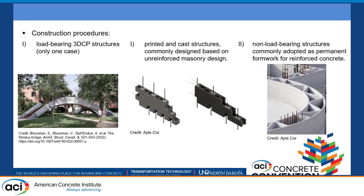One of the most important takeaways from our study was that we could categorize the built projects into three different categories: one, purely load-bearing 3D CP structures, which surprisingly was only one project; secondly, printed and cast structures commonly designed based on unreinforced masonry design; and lastly, non-load-bearing structures commonly adopted as permanent formwork for reinforced concrete. We found only one purely 3D CP project, showing a lack of information on how well these structures perform, which motivated us to study 3D printed structures in more depth.